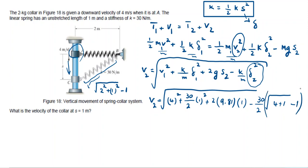So I will get the value of V2 is equal to 4.26 meters per second.